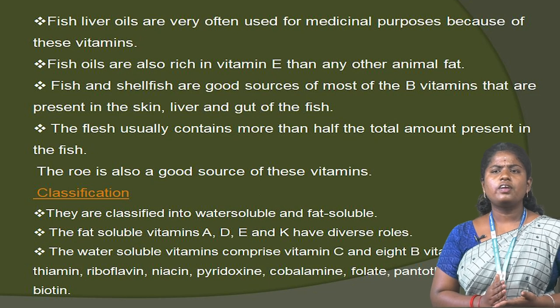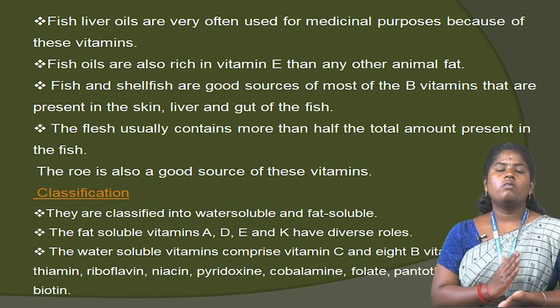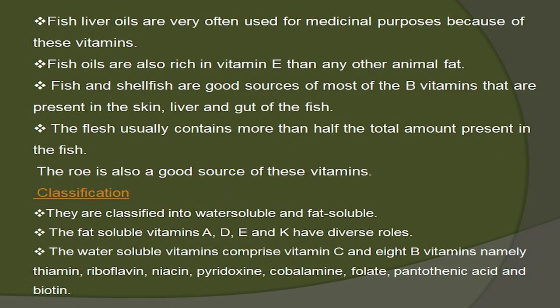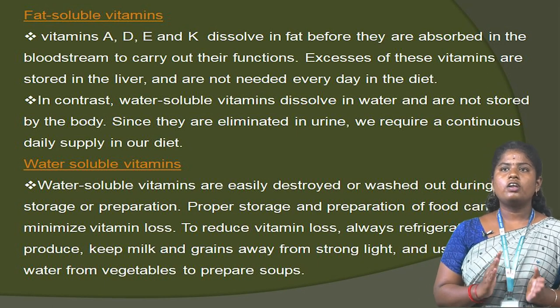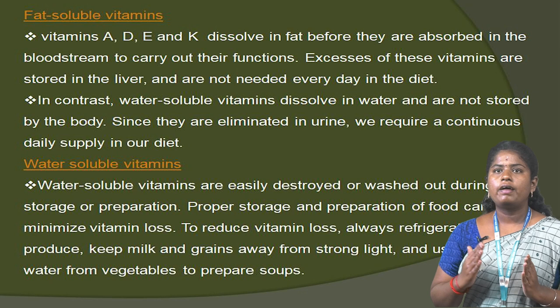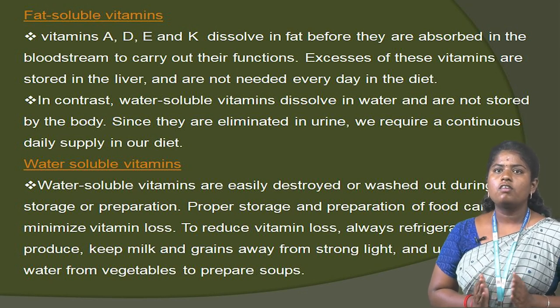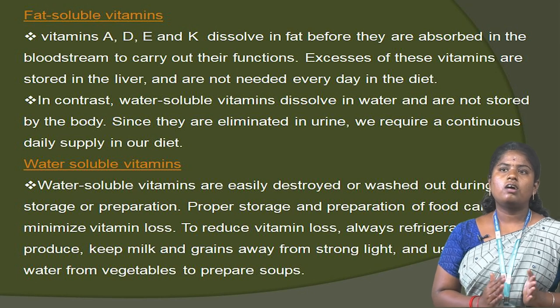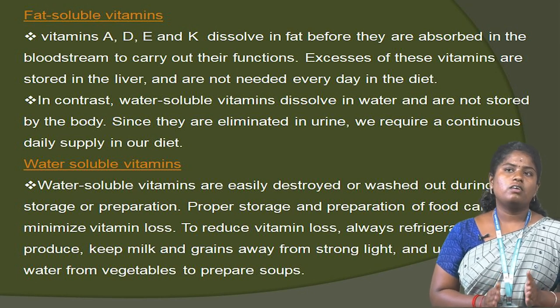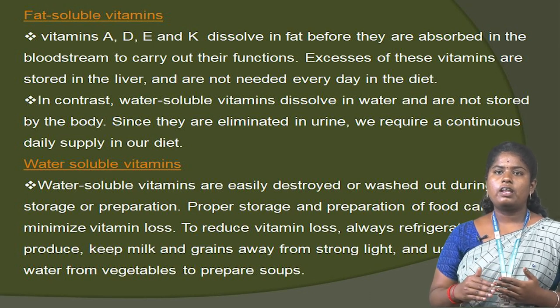Classification: vitamins are classified into water-soluble and fat-soluble vitamins. The fat-soluble vitamins A, D, E and K have diverse roles. The water-soluble vitamins comprise vitamin C and the B vitamins, namely thiamine, riboflavin, niacin, pyridoxin, cobalamin, folate, pantothenic acid and biotin. Fat-soluble vitamins dissolve in fat before they are absorbed into the bloodstream. Excesses of these vitamins are stored in the liver and are not needed every day in the diet. In contrast, water-soluble vitamins dissolve in water and are not stored by the body since they are eliminated in urine, requiring a continuous daily supply in the diet.